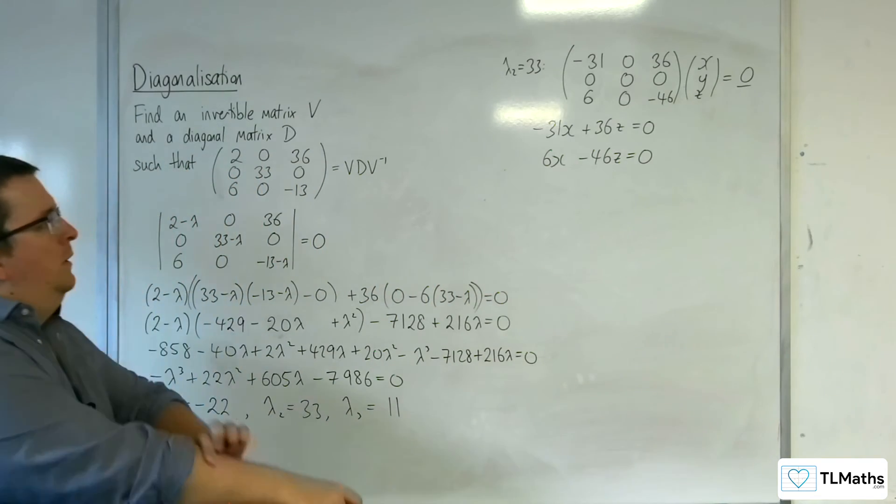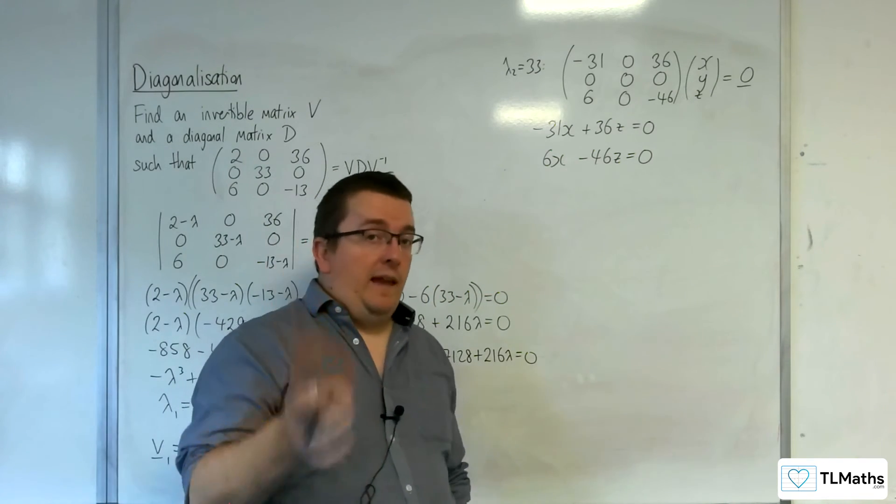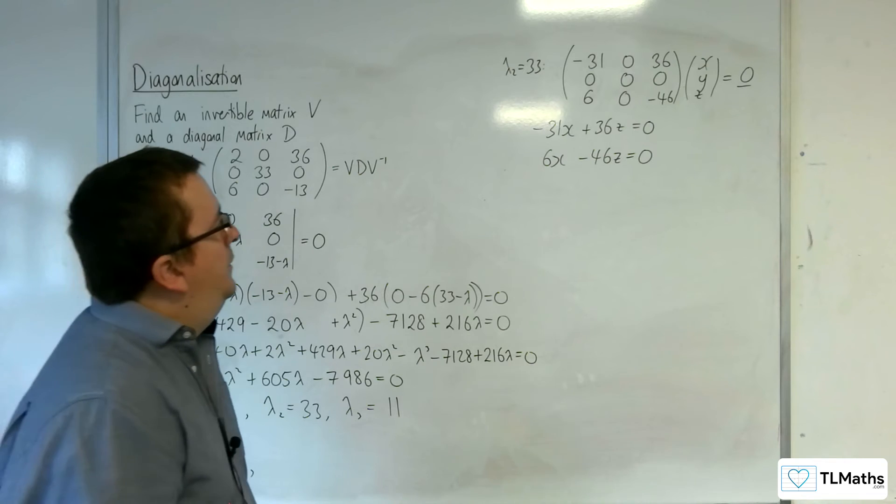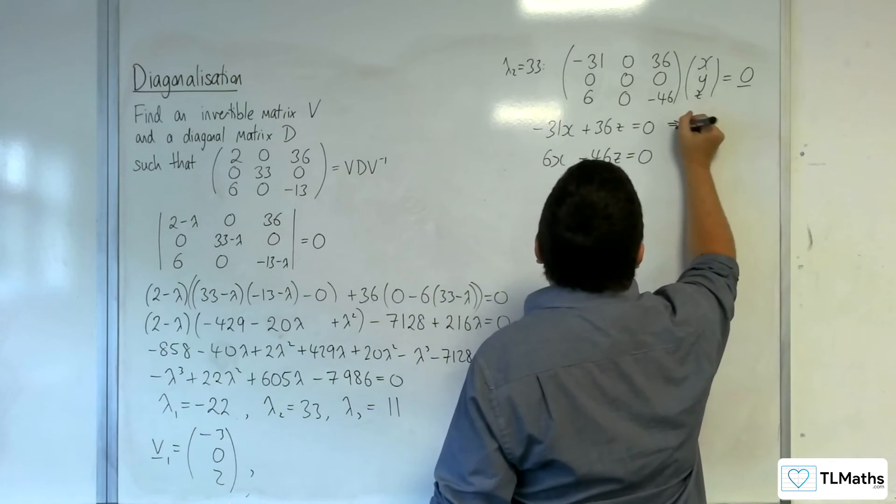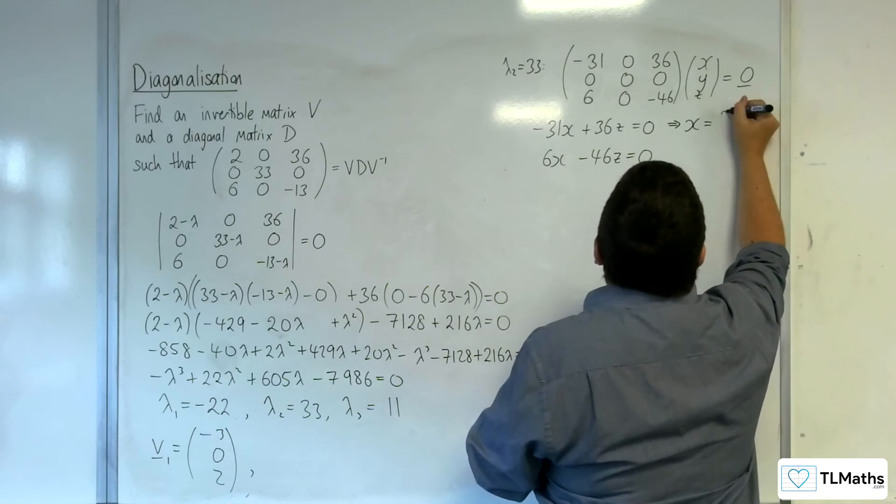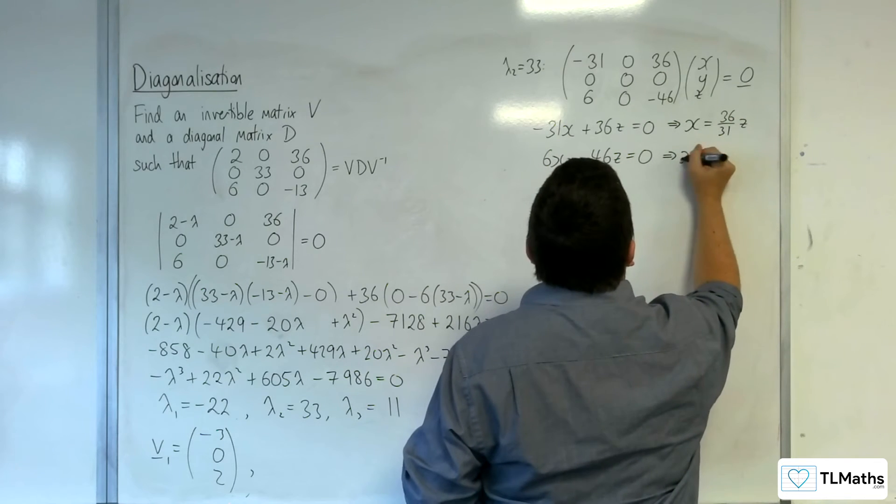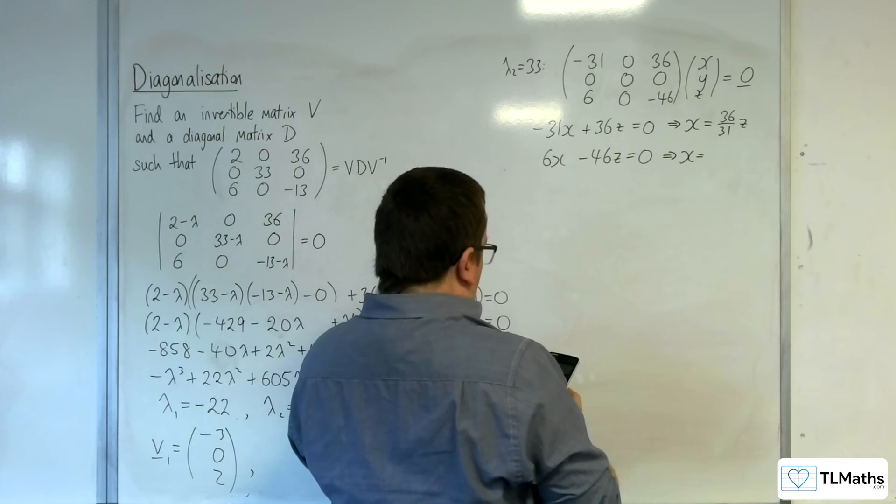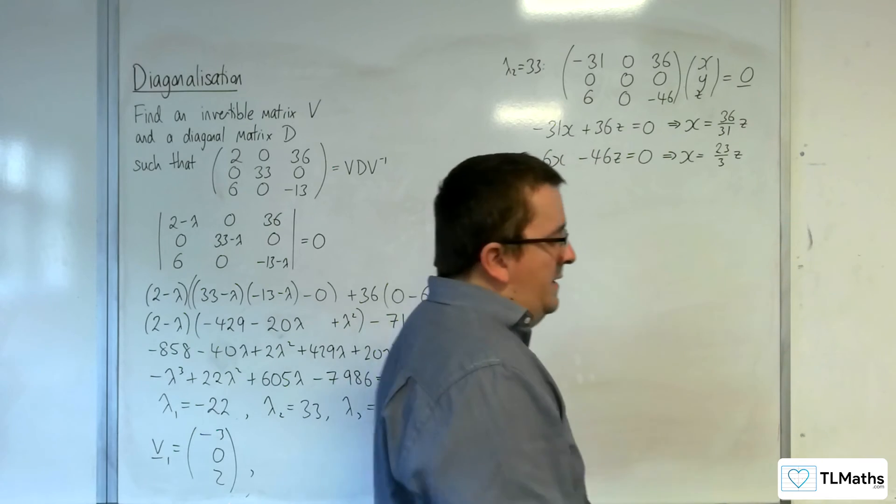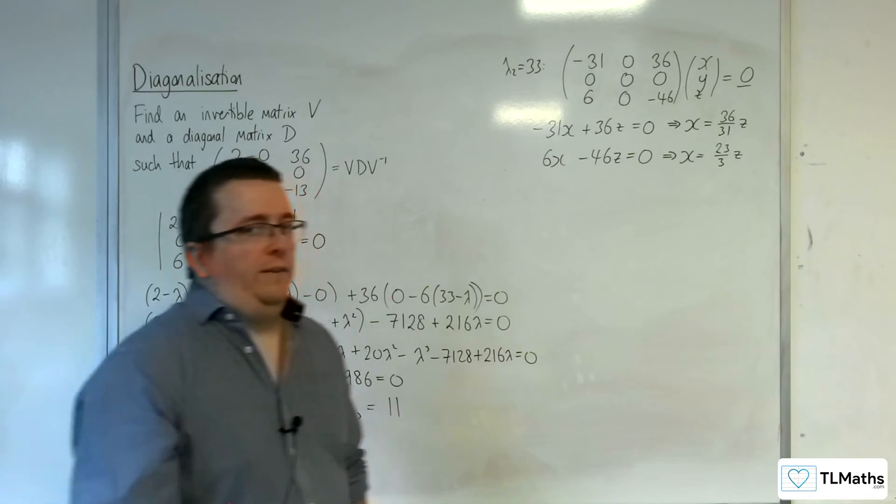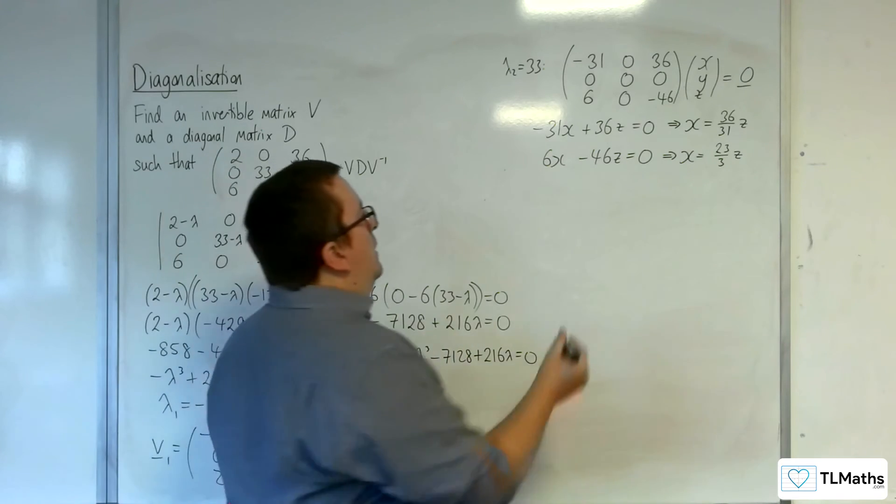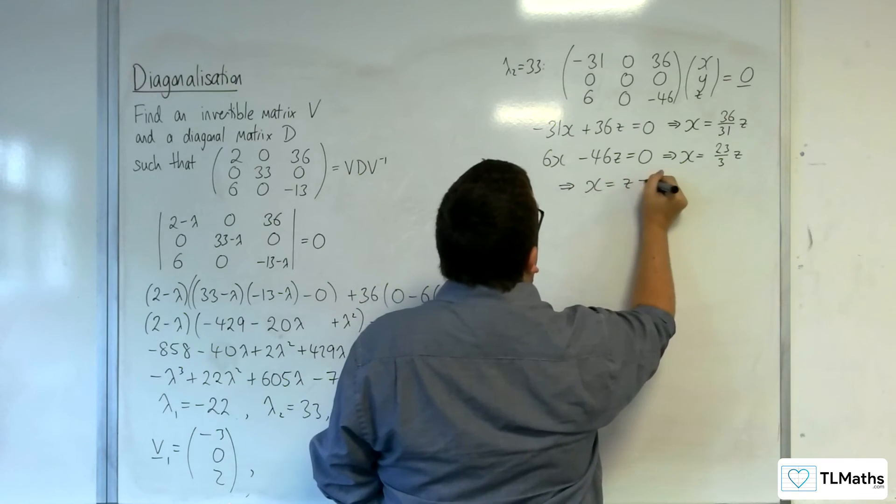Be careful here, because these two equations aren't equivalent. This one is saying that x would have to be 36 over 31z. And this one is saying that x has got to be 46 over 6, so 23 over 3z. They can't both be right, unless the x and the z are 0. So this is giving us that x equals z equals 0.